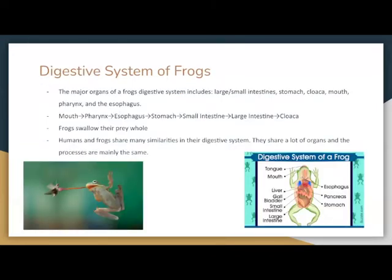The digestive system of frogs. The major organs include the large and small intestines, the stomach, the cloaca, mouth, pharynx, and esophagus. Food goes in through the mouth, then the pharynx, then the esophagus, then the stomach, then the small intestine, then the large intestine, and finally the cloaca. Frogs swallow their prey whole, and humans and frogs share many similarities in their digestive system — they share a lot of organs and the processes are mainly the same.